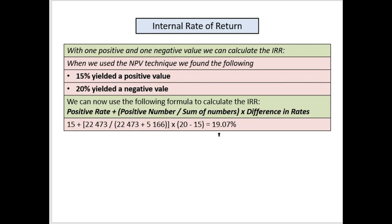The positive rate was 15%. The answer will be expressed as a percentage. So it's 15 plus our positive value of 22,473 divided by the sum of the two values, multiplied by the difference in the two rates which is 5%. This gives you 19.07%.